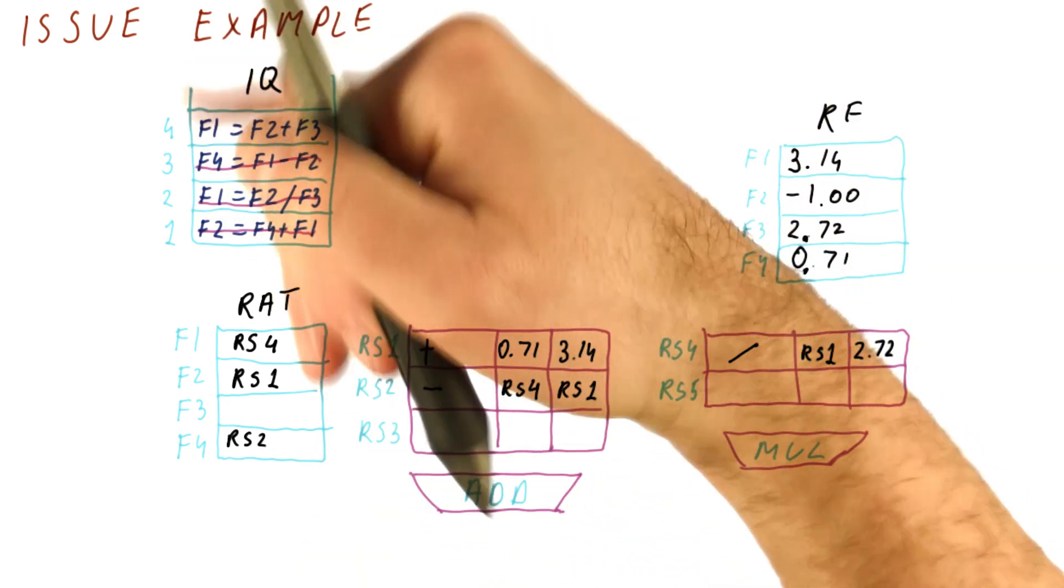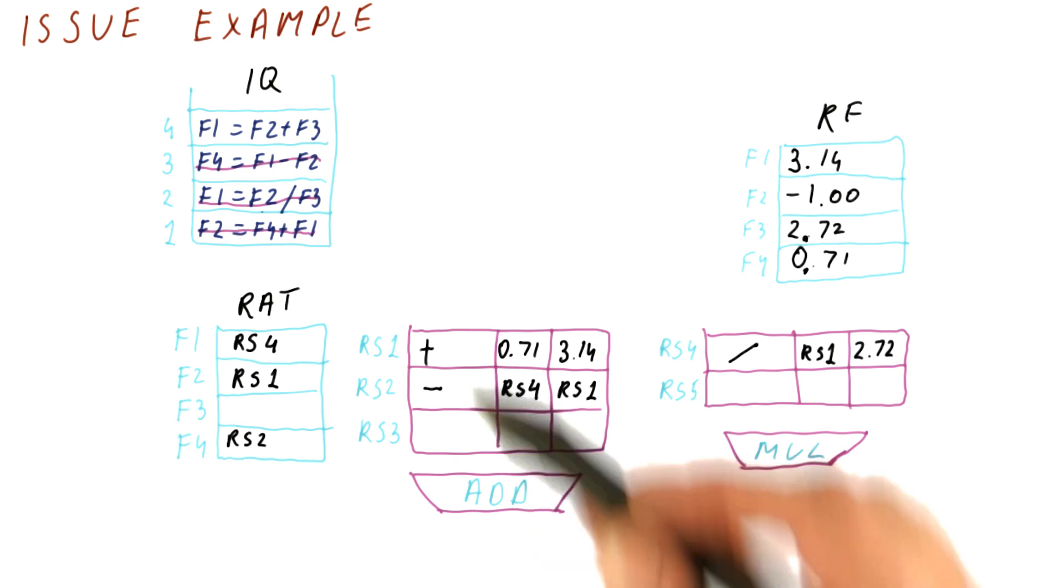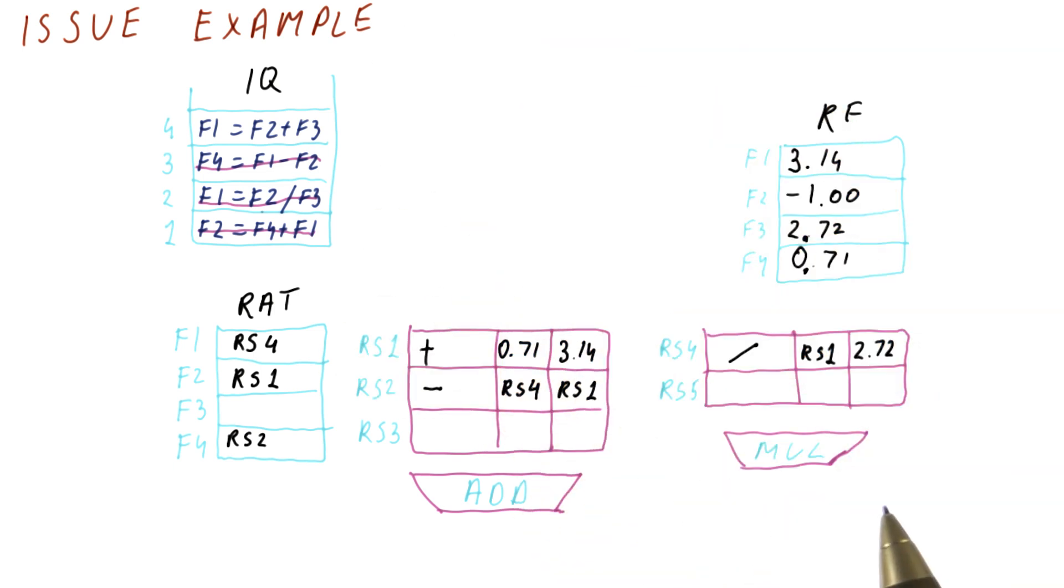Of course, more instructions are probably going to come this way, but we're not going to look at that because that took too many instructions for this example. Now, let's say that there wasn't an issue slot here.